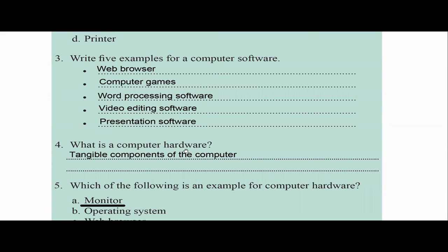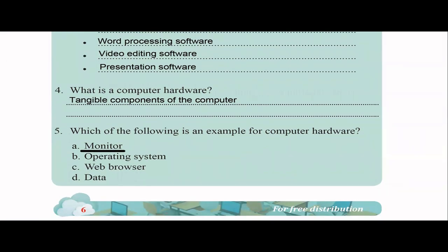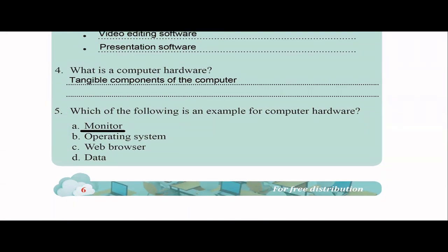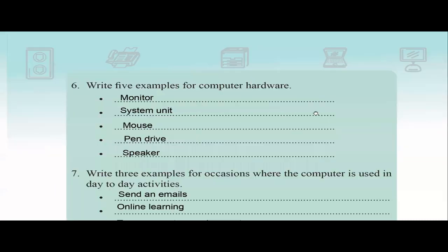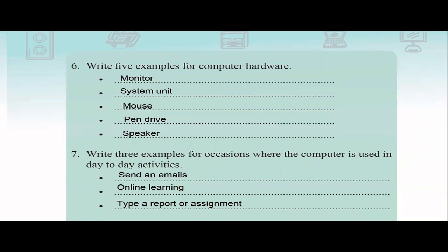What is a computer hardware? So I told you software is something intangible, you cannot touch and feel, but hardware is the tangible components of a computer like the input devices, output devices, we know so many computer hardware. Which of the following is an example for computer hardware? So operating system is a software, web browser is a software, data is something you feed into the computer, and monitor is the output device. So that is the example for a computer hardware. Write five examples for computer hardware: you can write input device, output device, system unit, monitor, mouse, pen drive, speaker, storage devices. So any of these devices, these are computer hardware.